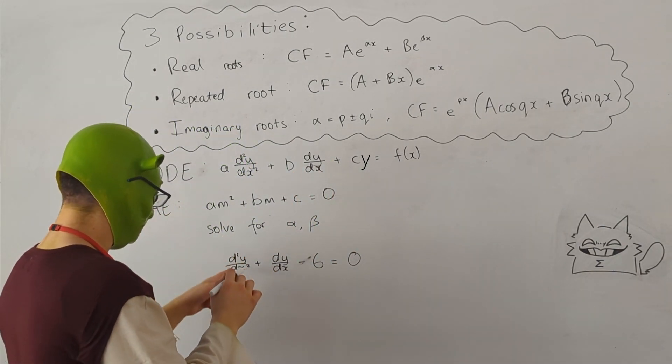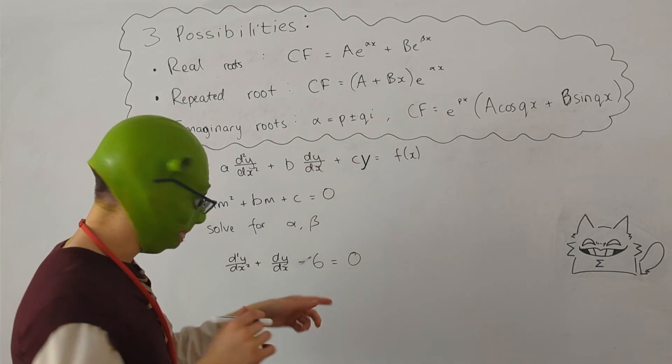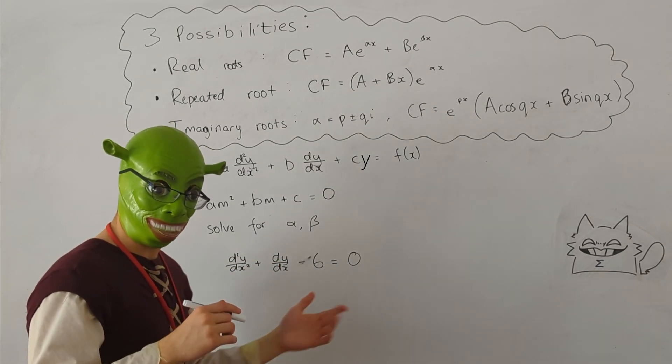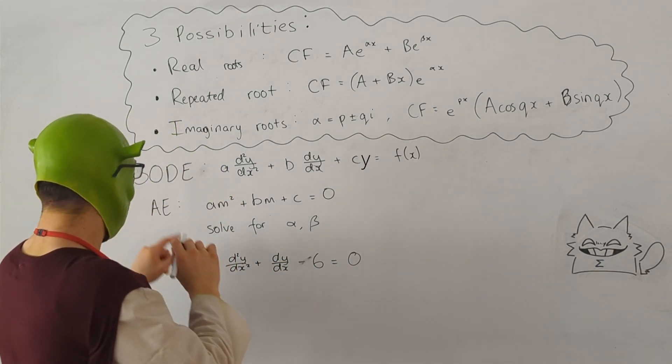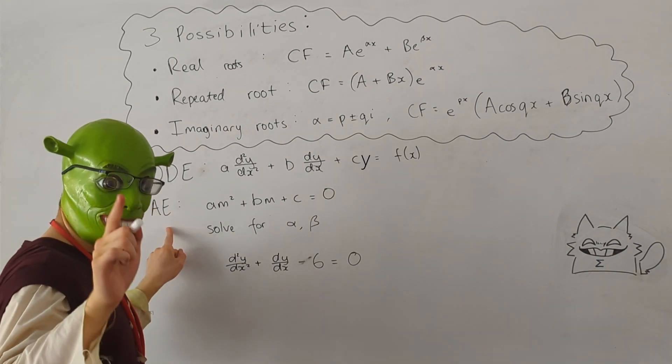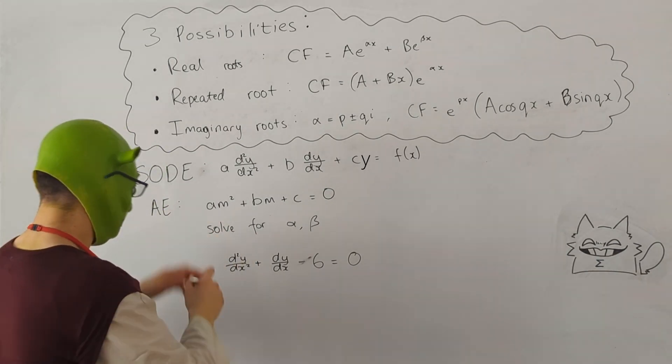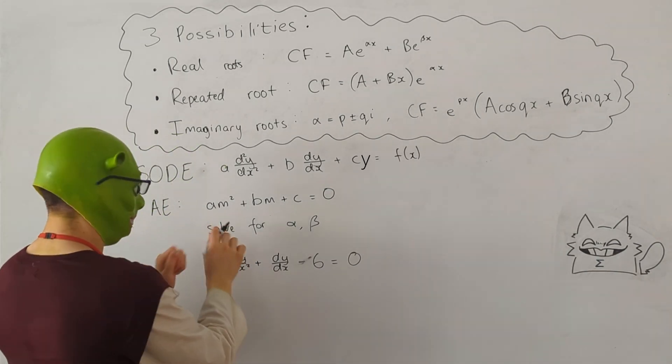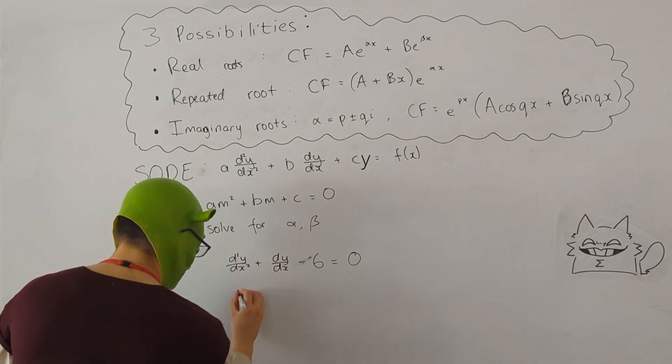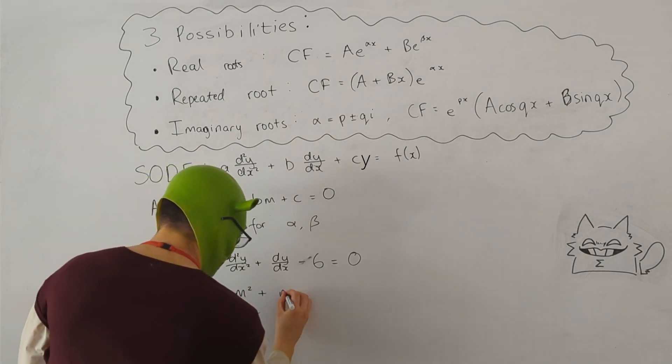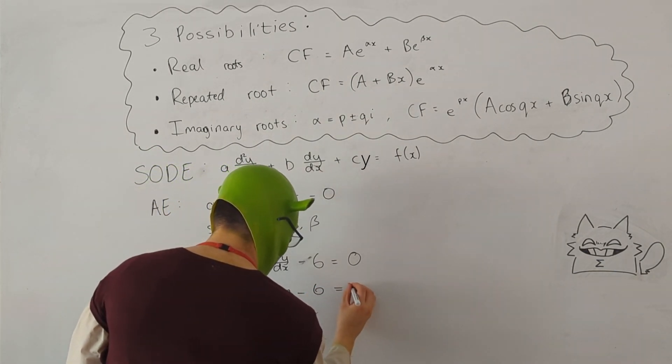So if you look at this equation here, you can see A is 1, B is 1, and C is minus 6. So what we need to do is we need to turn this into an auxiliary equation. So we take the coefficients and we put them in front of M instead, so we get M squared plus M minus 6 equals 0.